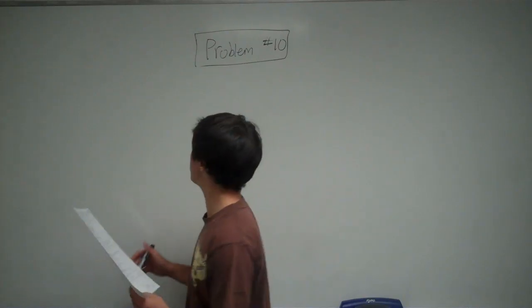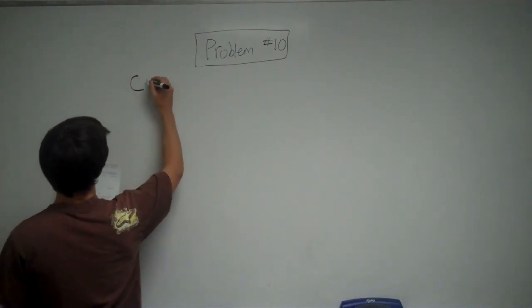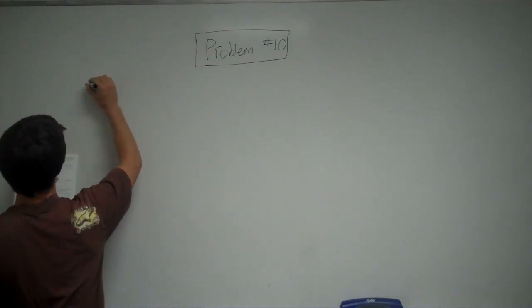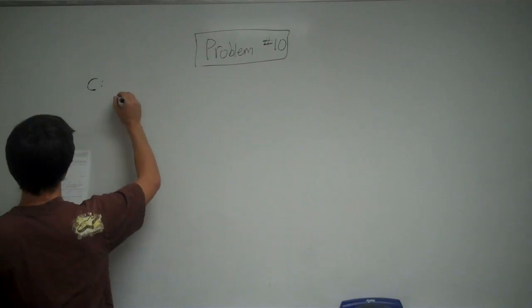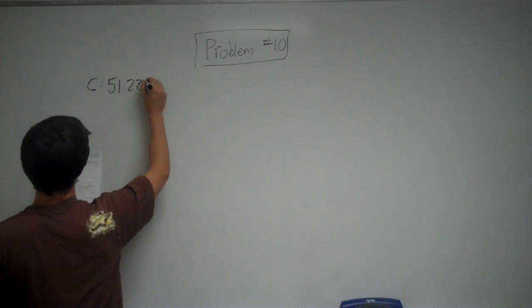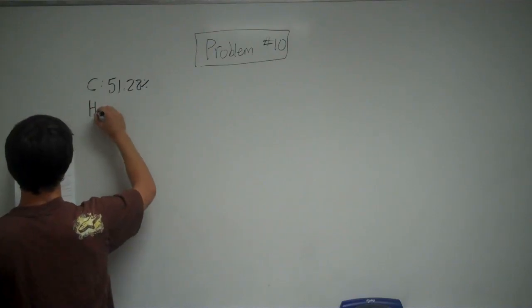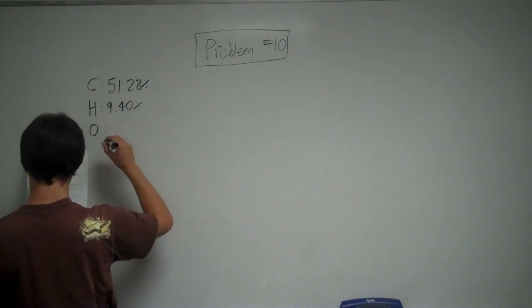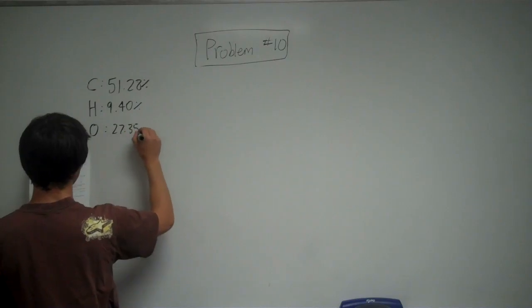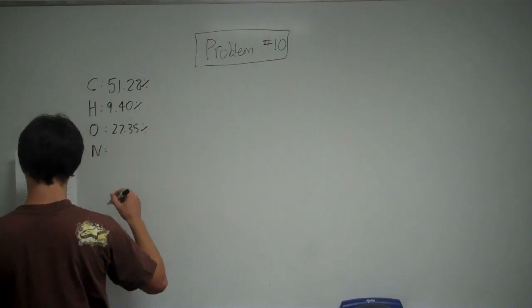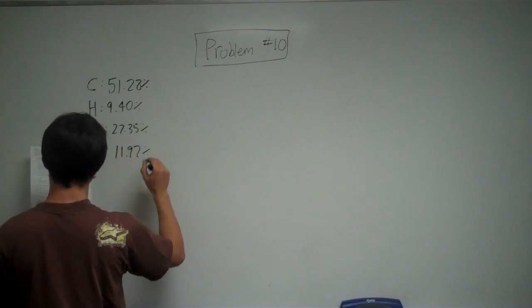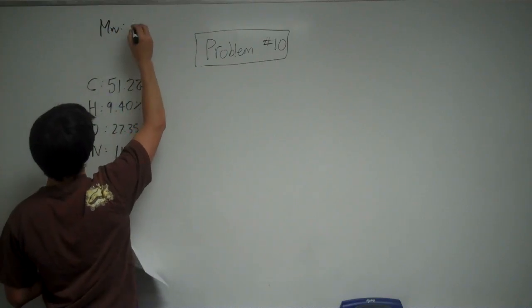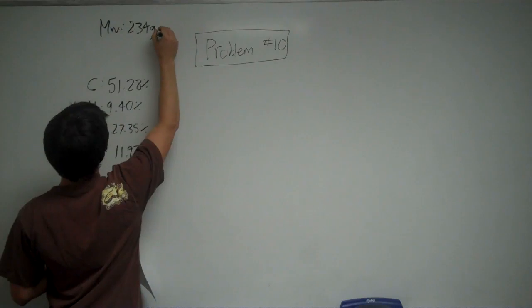So what you can do in this, here's the information they give you. They say carbon is 51.28% of the compound, hydrogen is 9.40%, oxygen is 27.35%, and nitrogen is the balance, which is 11.97%. And they want the molecular formula for the compound with the molecular weight of 234 grams per mole.